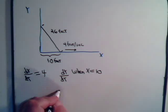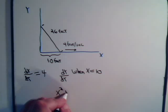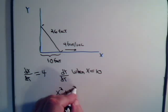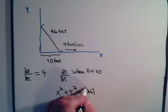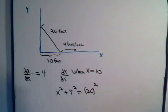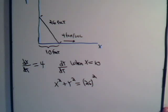So, here's our relationship. And now, we're going to take the derivative of this with respect to time. We want to find dy/dt and dx/dt. So, we're going to do some implicit differentiation.